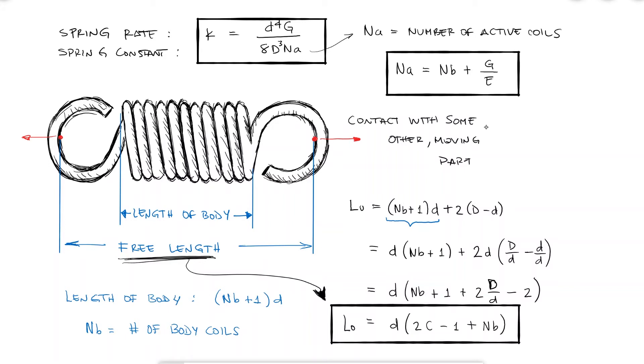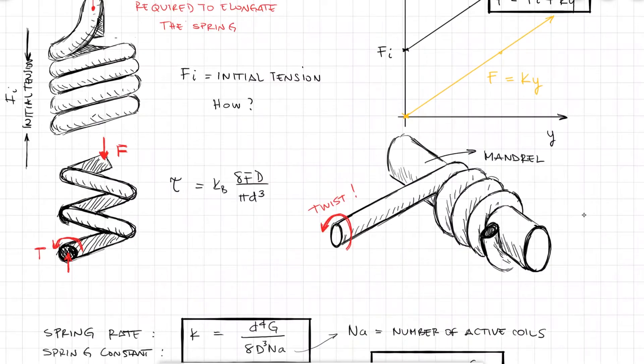At this point we have everything we need to calculate the spring constant k, the stresses both tensile and shearing, and we're only missing how to calculate the initial tension Fi.